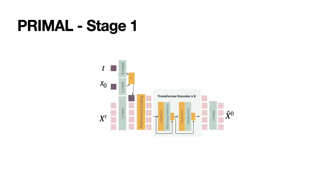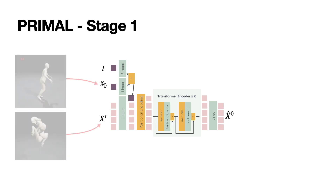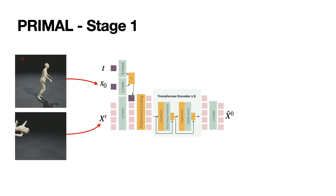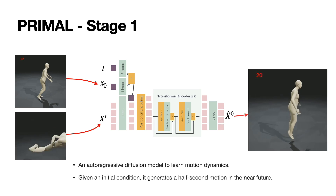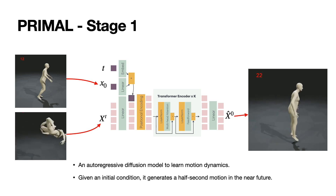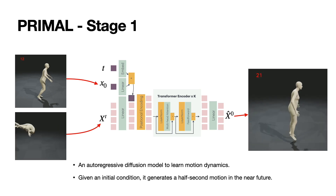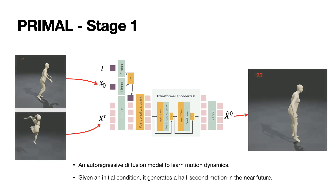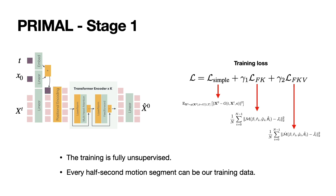In the first stage, we implement an autoregressive diffusion model to learn the motion dynamics within a short time interval. Given an initial condition of the body that includes its joint locations and velocities, the diffusion model generates a half-second motion in the near future. A half-second corresponds to the average hang time of a human jumping, and we argue this interval contains the essential, physics-driven elements of human movement. By focusing on half-second motions without semantic labels, this approach gives us vast amounts of motion capture data with which to train the model. Unlike previous methods, we don't use foot contact annotations. The training process is fully unsupervised.